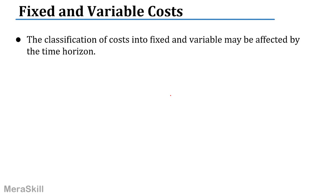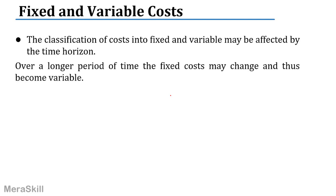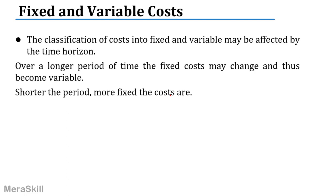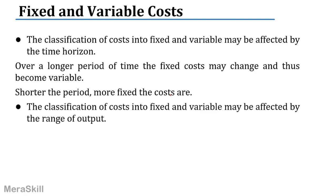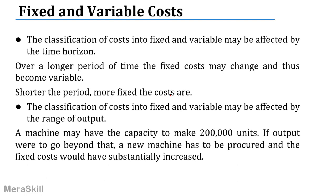The classification of cost into fixed and variable may be affected by the time horizon. Over a longer period — say 5 or 10 years — fixed costs change and become variable. The shorter the period, the more fixed the costs are. The classification may also be affected by the range of output.